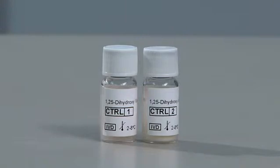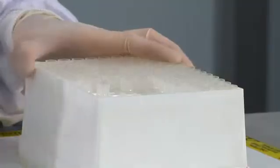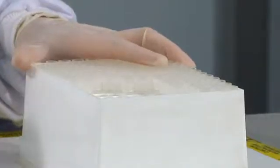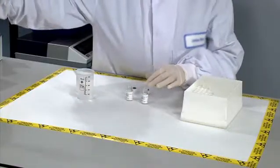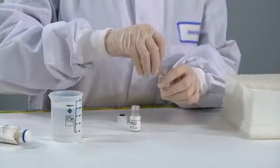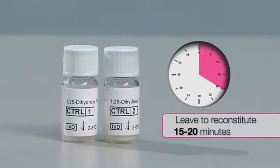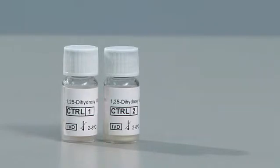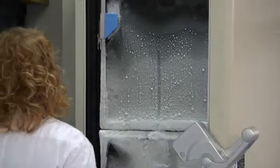Reconstitute controls immediately before use. To prepare the controls, pipette 1.2 milliliters of distilled or deionized water into each vial. Replace the stoppers and leave for 15 to 20 minutes to reconstitute. Invert several times to ensure complete reconstitution. If controls are to be used more than once, freeze within 15 minutes of reconstitution at minus 20 degrees Celsius.